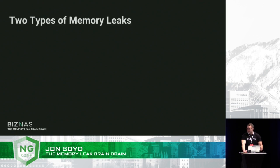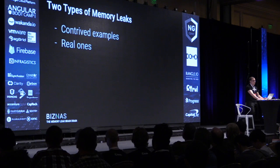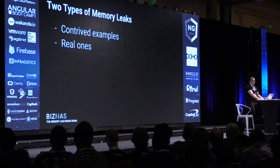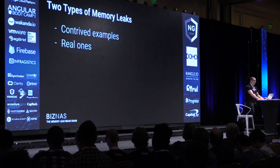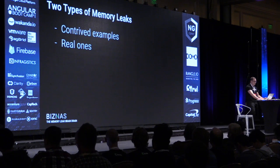In my mind, there are two types of memory leaks. There are the contrived examples you see in every tutorial — they don't really apply to what you actually find in the real world. They're a nice example of how to find a memory leak, but they don't help you solve it. And then there are the real ones: the ones you're going to find in your giant enterprise application that those examples didn't help you solve at all.